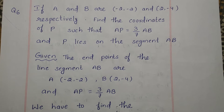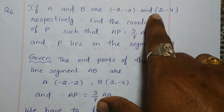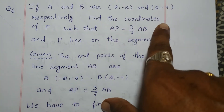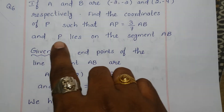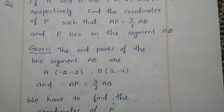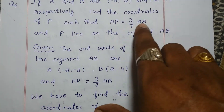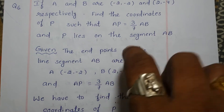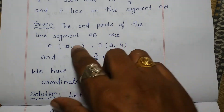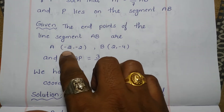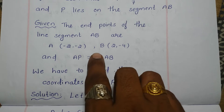Q6 from Exercise 7.2, Coordinate Geometry. If A and B are respectively the endpoints of a line segment, find the coordinates of P such that AP is 3/7 of AB, and P lies on the segment AB. The endpoints are given as A(-2, -2) and B(2, -4), and the condition is AP = 3/7 of AB.